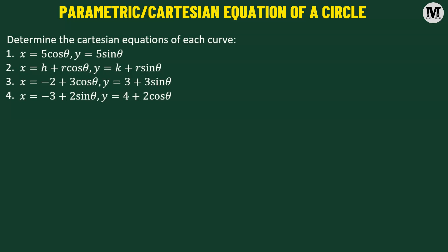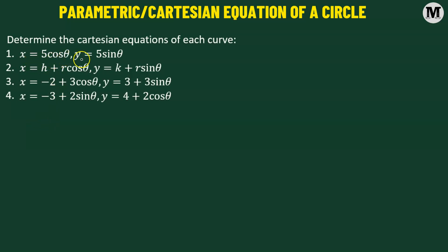In this problem, we need to determine the Cartesian equation of each of the given curves. We are given the parametric form of the curve. Starting with problem number 1, here x is dependent on the parameter theta, and so is the y value.